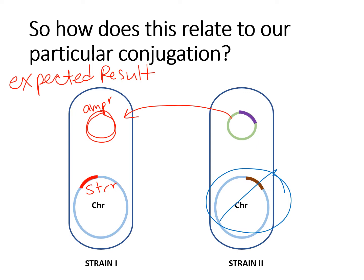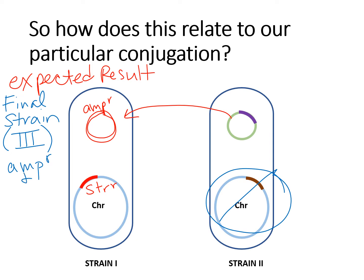So the expected result for the final strain — which we'll call strain three — is to have amp resistance and strep resistance, but no NAL resistance. Strain three, the final product of this conjugation, should be able to survive ampicillin and streptomycin, but should not grow on nalidixic acid. Circle, star, highlight that fact — it will come into play later when we're looking at potential results.